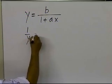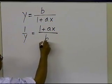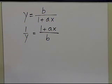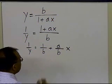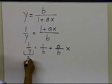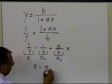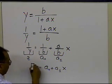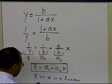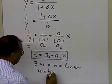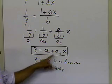We take 1 divided by y — we exchange the numerator with the denominator by taking the inverse of both sides. So 1/y = 1/b + (a/b)·x. If we call 1/y as z, 1/b as a0, and a/b as a1, we get z = a0 + a1·x. So z versus x is a linear relationship — it's simply a straight line.